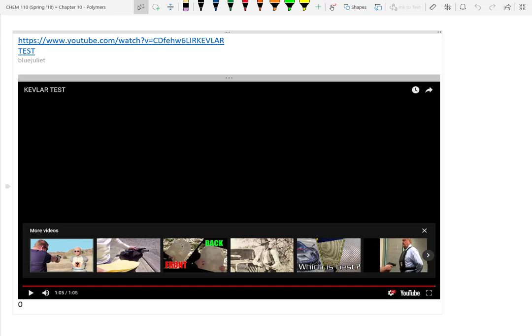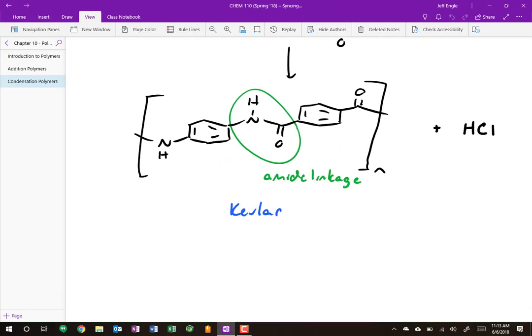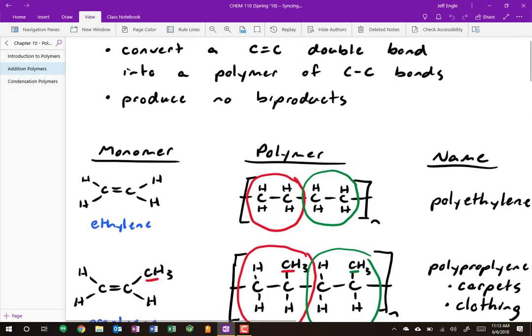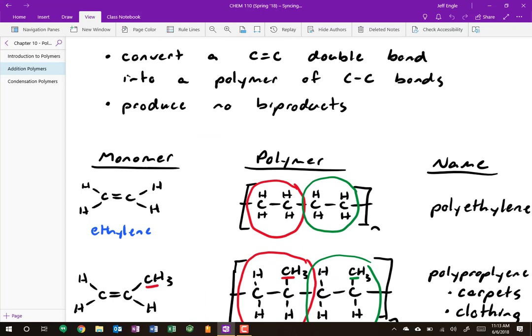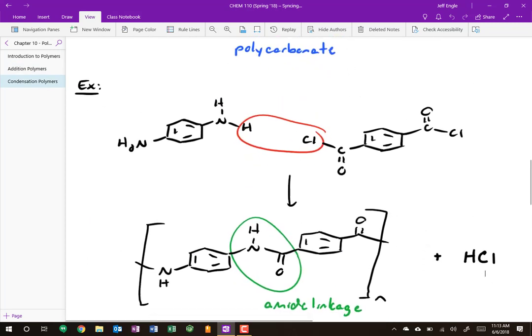So that's where we're going to end today. To kind of reiterate, because I know we went through this really quick, addition polymers always go from a double bond to a single bond. You don't kick off any byproducts. Condensation polymers, you link two things together and then you kick off a small molecule. It's usually going to be some sort of acid or water. On an exam, it'll probably look a lot like the pod. I just want you to know how to link things together to form a polymer. I'm not going to ask you about names or anything like that.